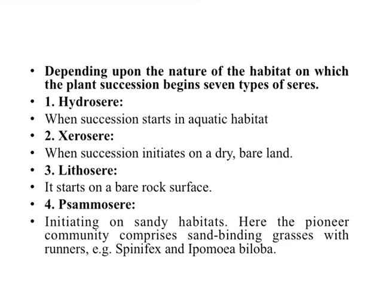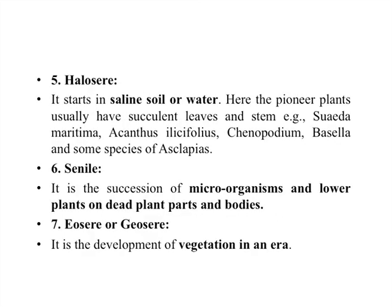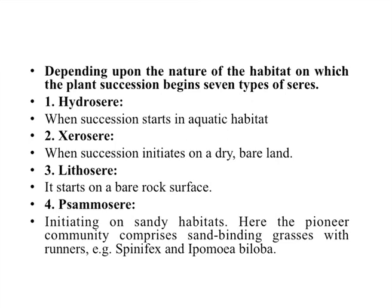Depending on the nature of the habitat, succession begins in different ways. There are seven types of seres: hydrosere, xerosere, lithosere, psammosere, halosere, sinsere, and isosere. All types of seres start with some microorganisms, plants, or animals. Hydrosere starts with aquatic habitats like rivers and ponds. Xerosere starts with dry and bare land.